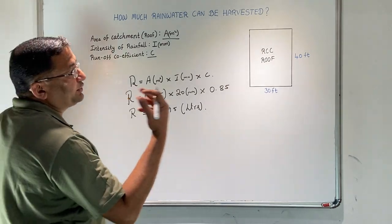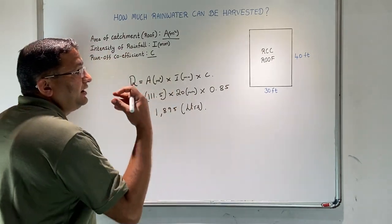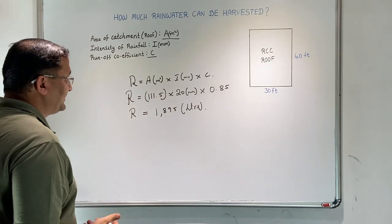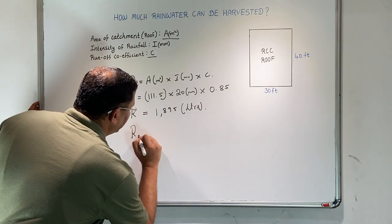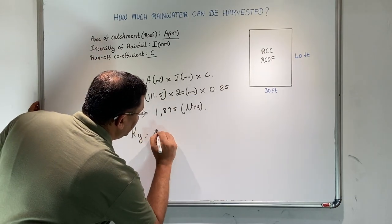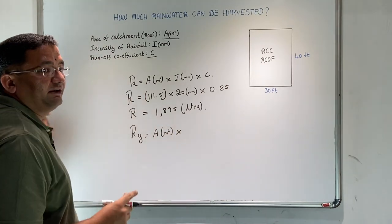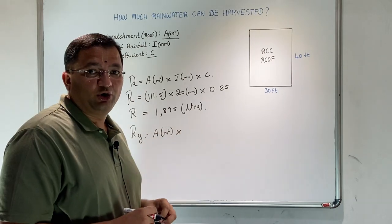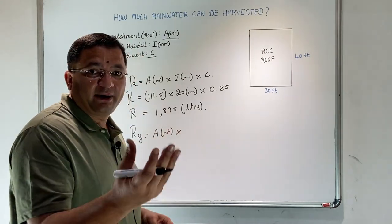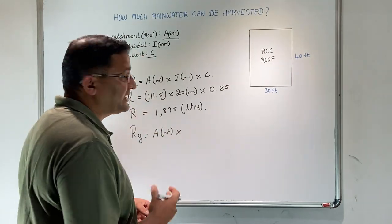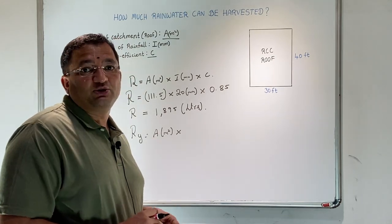It is easy to measure in liters for the purpose of rainwater harvesting. Suppose we want to calculate the runoff over the course of a year. Runoff for the year equals area in meter square again.